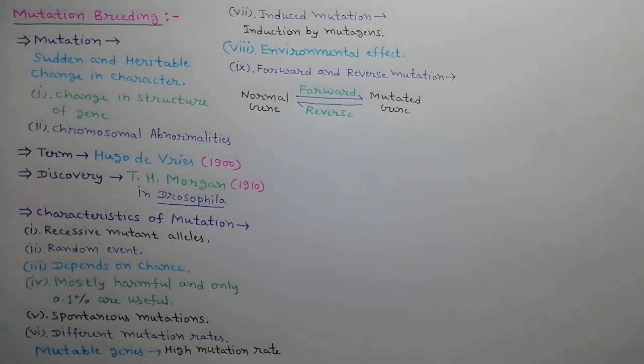There are two types of mutations based upon direction: forward mutation and reverse mutation. The rate of forward mutation is many times more than reverse mutation.